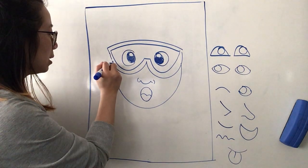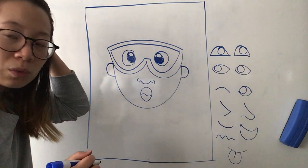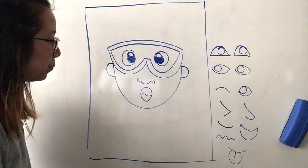Easy peasy, letter C and a backward C for the ears. You can do earrings if you want your scientist to have earrings. Up to you.